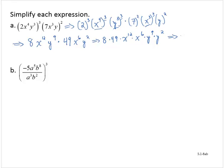So we have 392, x to the 18th — because x to the 12th times x to the sixth gives x to the 18th — and y to the ninth times y to the second is y to the 11th. So the answer is 392 x to the 18th, y to the 11th.